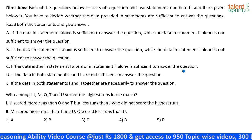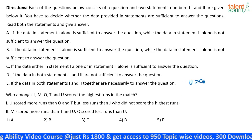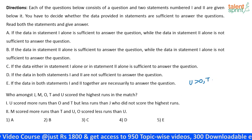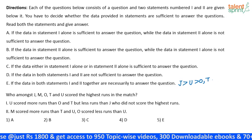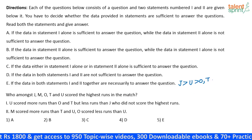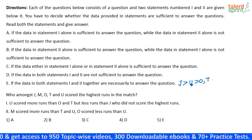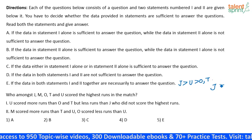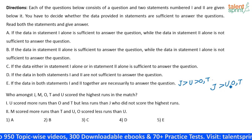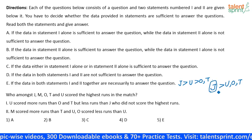It says that U scores more runs than O and T. Okay. But less than J, who did not score the highest runs. So, here, what do you understand? You understand, J has scored more than U, O and T. So, J scores more than U, O and T.